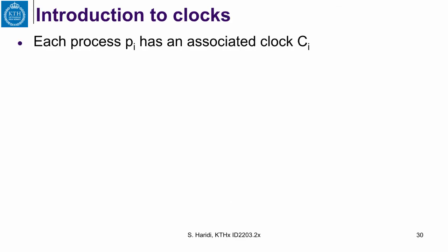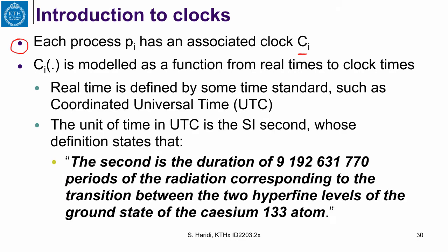Let us introduce clocks. Each process PI has an associated clock, which we call CI. CI is modeled as a function from real time to clock time. We have real time flowing forward, and at any time, the clock value of the processor tells you what the current time is.